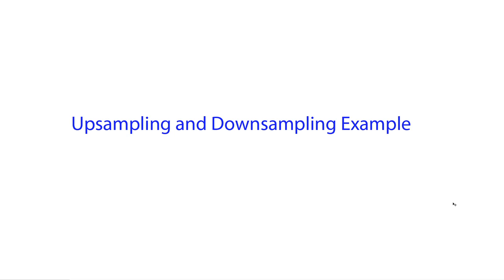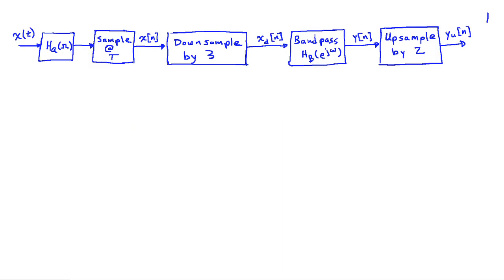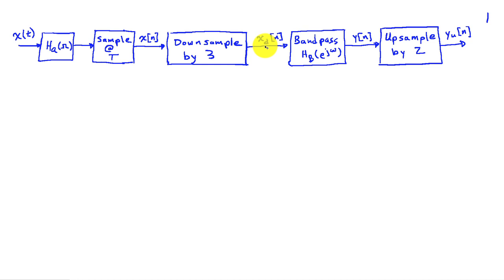We're now going to look at an example of using up-sampling and down-sampling inside of a DSP system. The system we're going to consider has an input x(t) passing through an analog anti-aliasing filter h_a(ω). We'll then sample at intervals of T, giving a discrete-time signal x(n), which we'll down-sample by 3 to obtain x_d(n). Then we'll pass that through a bandpass filter and up-sample by 2 to get y_u(n).